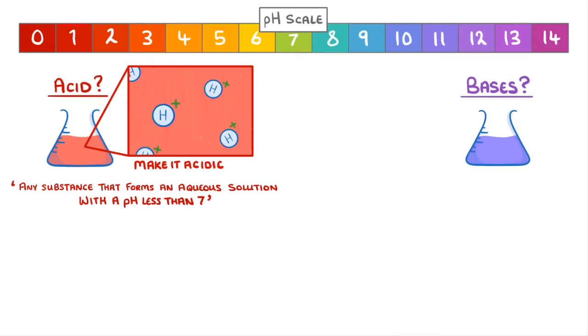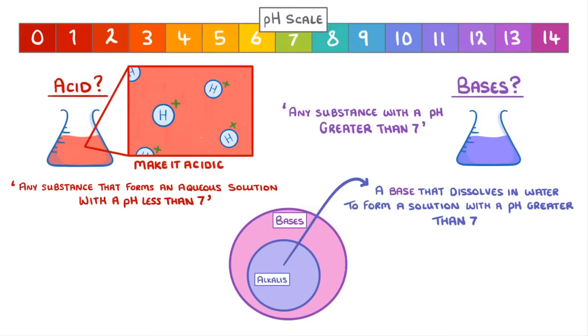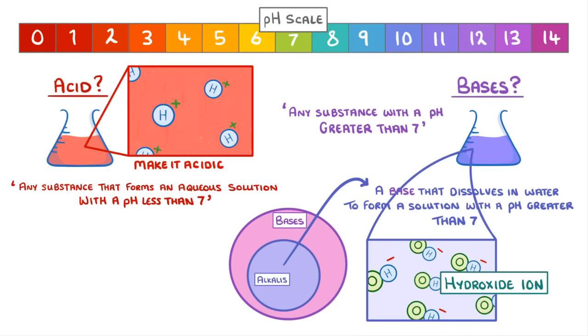On the other side of the scale, we have bases, which we define as any substance with a pH greater than 7. Meanwhile, alkalis, which we mentioned before, are actually a subgroup of bases that are soluble in water. So we would say that an alkali is a base that dissolves in water to form a solution with a pH greater than 7. And these alkalis form OH- ions in water, which we call hydroxide ions.